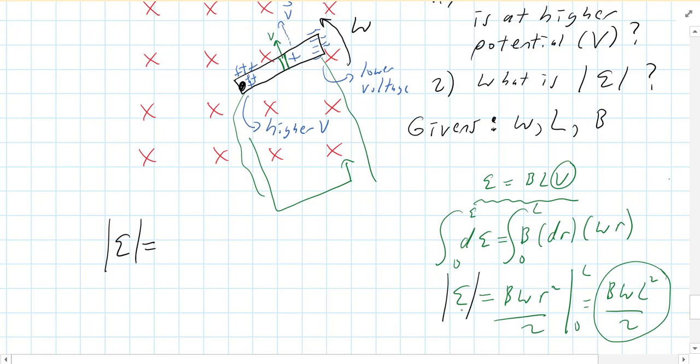So the magnitude of the EMF is the change in magnetic flux over dt, the derivative of the magnetic flux, the change in it versus time, which is d times bA over dt. So it's the time derivative of bA.